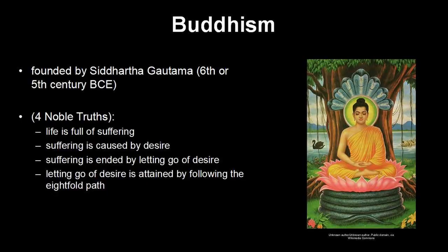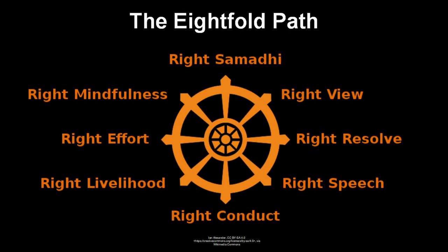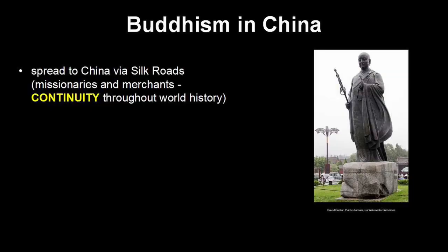Buddhism's goal is to end suffering by ending desire, as stated in the Four Noble Truths. To do this, you follow the Eightfold Path, which requires high moral standards and very strict discipline. You should have a general idea about the goals and practices of Buddhists, and more importantly, how Buddhism got to China and how it spread from China to other parts of Asia. Buddhism originated in India and made its way to China via the Silk Roads — sometimes through missionaries, but very often through merchants. This relationship between trade and the spread of belief systems is a major continuity throughout AP World History.